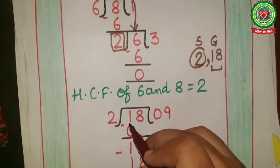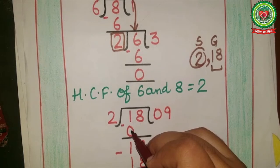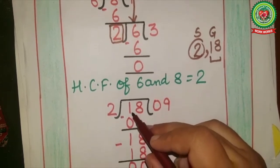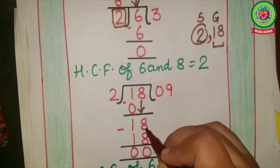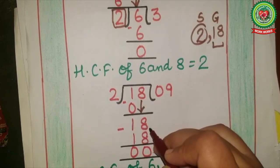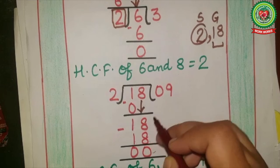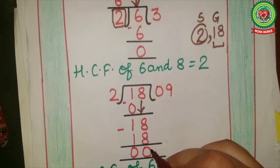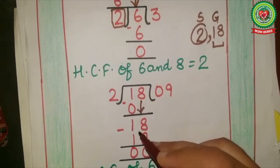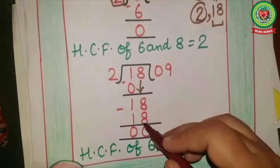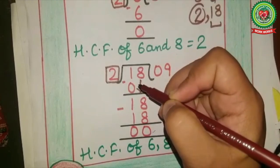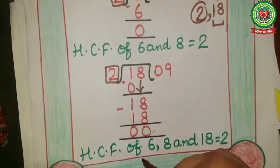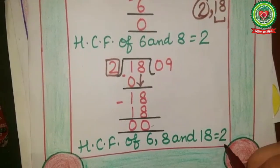Now check on the 2 times table: 18 comes on the 2 times table — 9 twos are 18. 18 minus 18 equals 0, or you can do it digit by digit: 8 minus 8 is 0 and 1 minus 1 is 0. Remainder is zero, which means we will not divide again. The divisor of this division is the HCF. So HCF of 6, 8, and 18 is equal to 2.